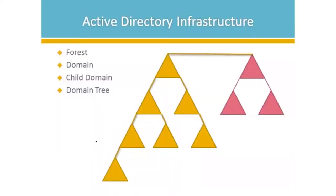Let's put some definitions to some terms. When you're looking at Active Directory infrastructure, we have forest, domains, child domains, and domain trees. The first thing to cover is forest. You can only have one Exchange organization within your forest. A forest is a collection of domains and child domains or domain trees that share a common schema. A schema is really all objects and all object attributes that are available within the network.